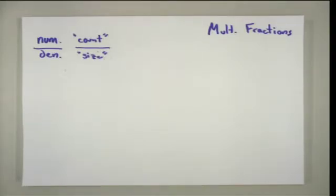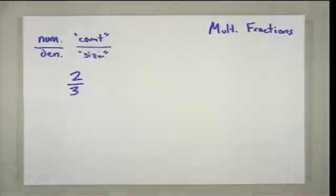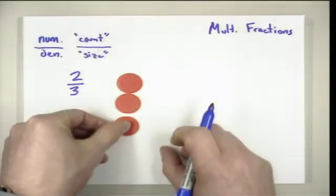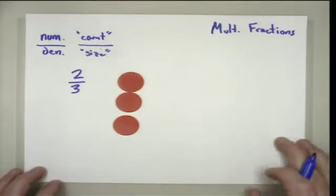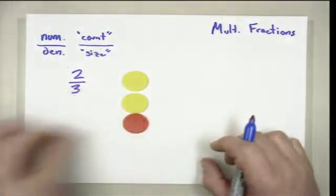So what does that look like in terms of modeling? Well, let's say we wanted to model the fraction two-thirds. That means that I have a denominator of three, which is a size of three. Now I'm counting two out of those three. So how will I show that I'm counting those two? I will flip them over and I will make them yellow.